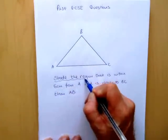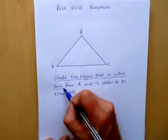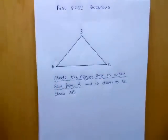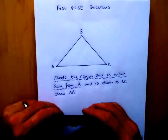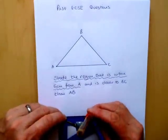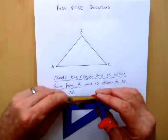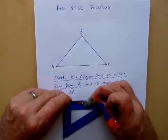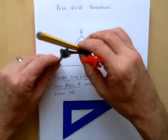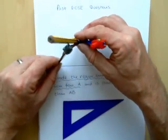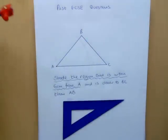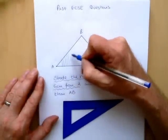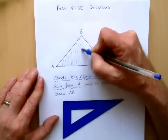The first condition is to shade the region that is within 6 cm from A. To be a fixed distance from that point and construct the boundary line, I'm going to set my compass to 6 cm. And if I draw that arc here, then anything to this side of the line is within 6 cm from A. I'll shade that region here.